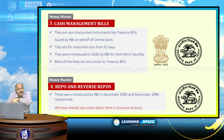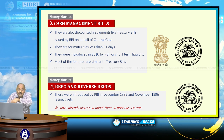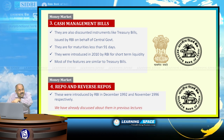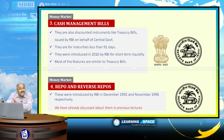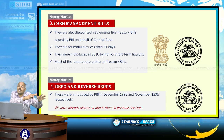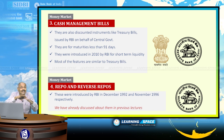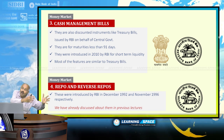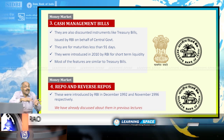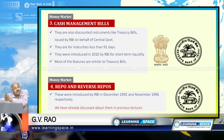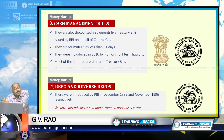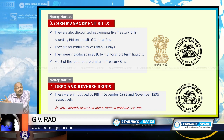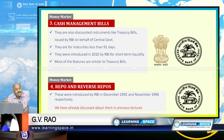The government securities market includes treasury bills and cash management bills for short duration, and dated government securities for a maximum duration of 40 years.